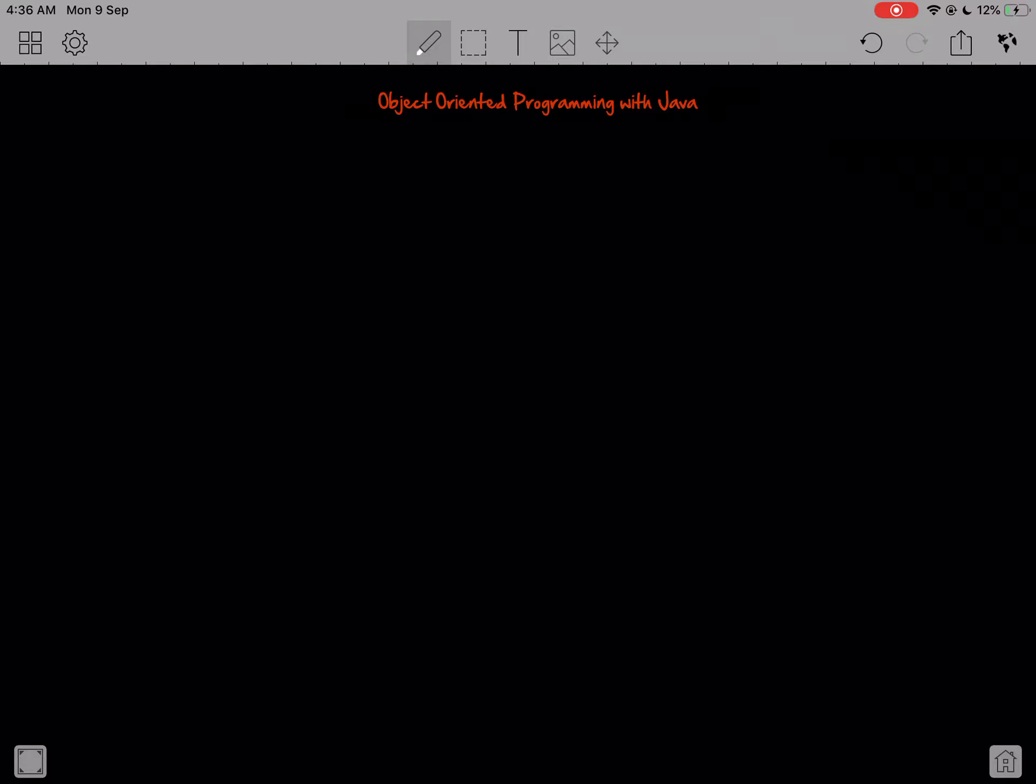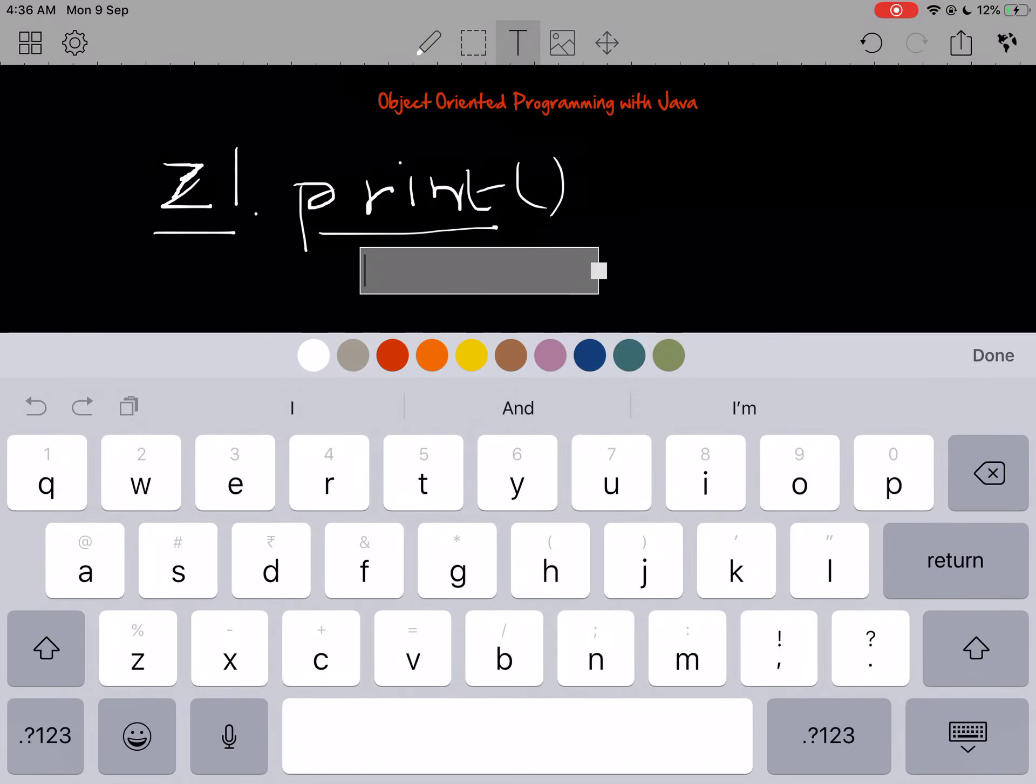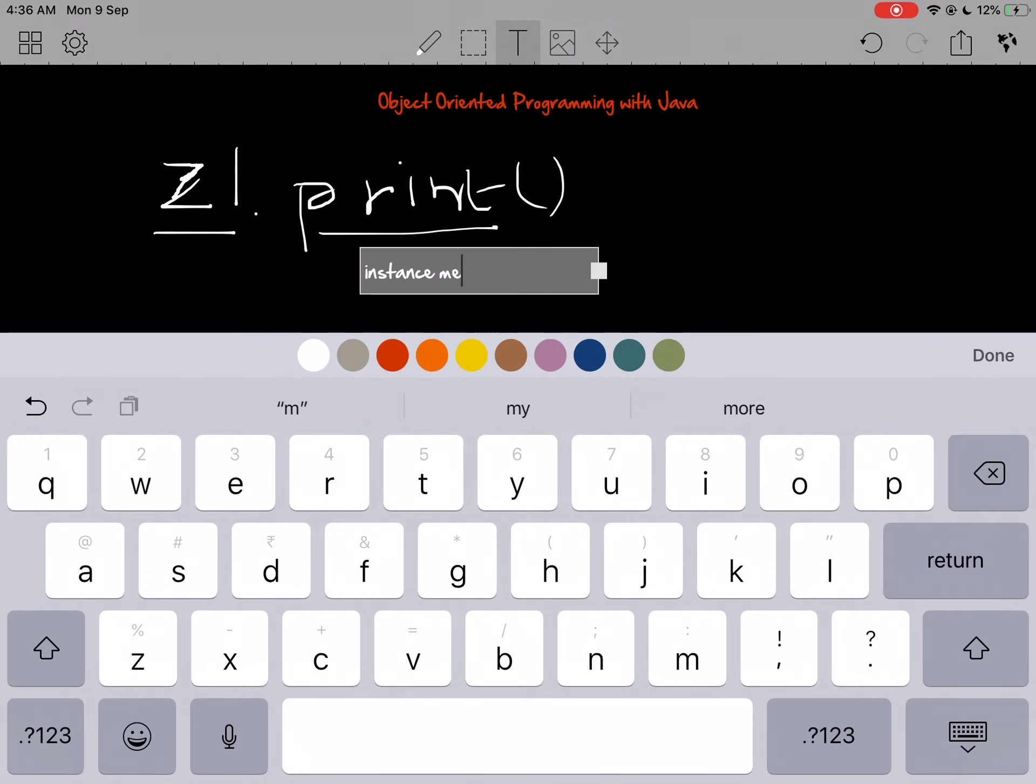So we wrote one method in the last programming session. We wrote the print method and we called it like this: z1.print. And because z1 is an instance of the complex class, if you remember, print is called an instance method.